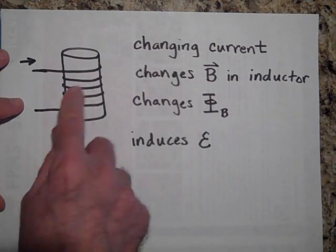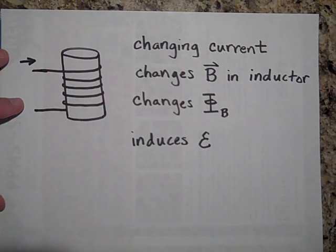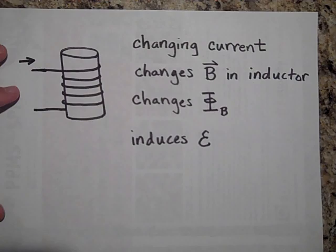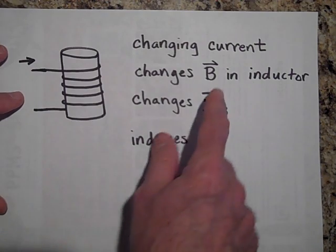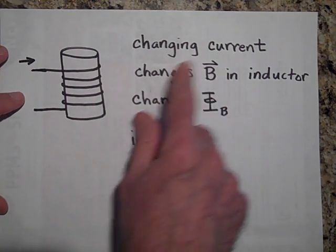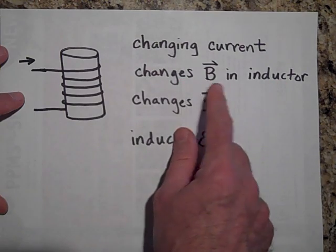That means that the field inside is also changing. Remember the field inside there, right at the center, is going to be equal to μ₀ times little n times i, and so it's dependent on the current. If you change the current, you change the magnetic field.